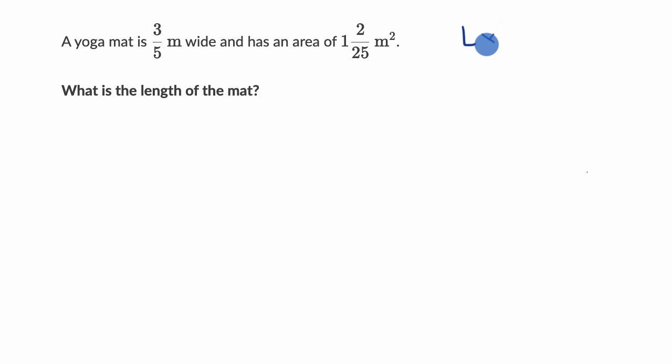Well, we know that length times width is going to give you area. Or another way of thinking about it, if the product of two numbers gives you a third number, if you take that third number and divide it by one of these, you're going to get the other one. So another way of thinking about it is length would be the same thing as area divided by width.